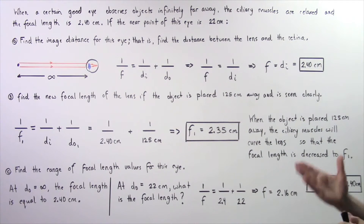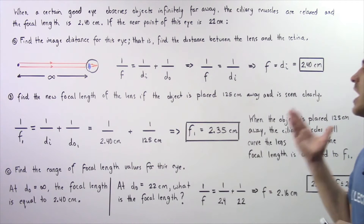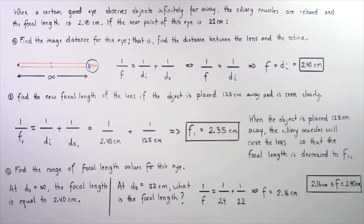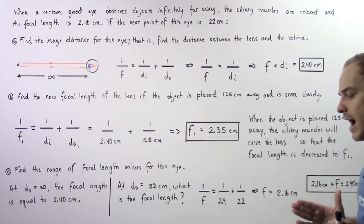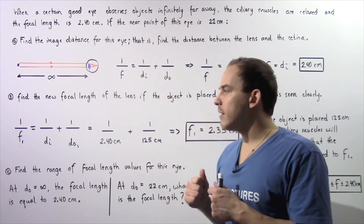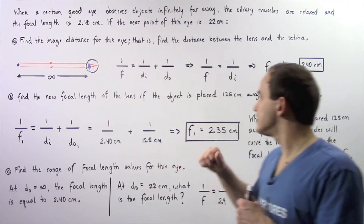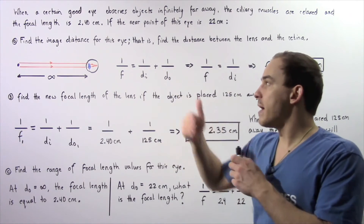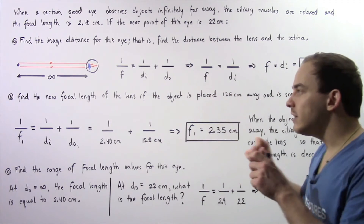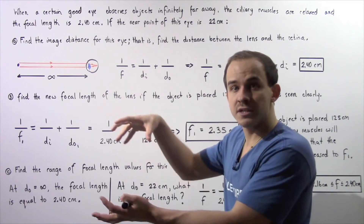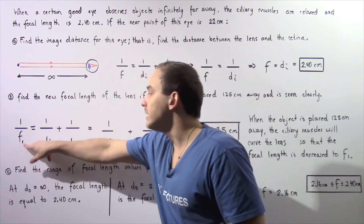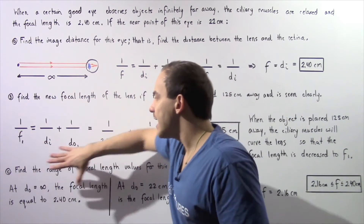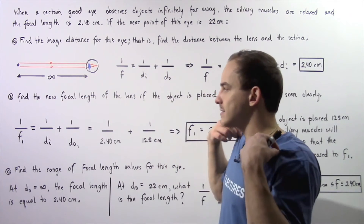Since the shape of the eye doesn't actually change, the image distance is always the same for this good eye. Now let's move on to part B. We want to find the new focal length of the lens if the object is placed 125 centimeters away. We're assuming our eye is a good eye, so when we bring the object from infinity to a distance of 125 centimeters with respect to the lens, the ciliary muscles contract and curve the lens, decreasing the focal length. We want to find what the new focal length is, so we apply the thin lens equation for our convex lens.